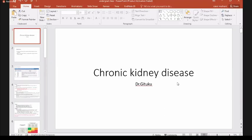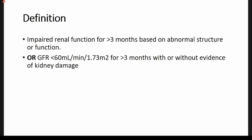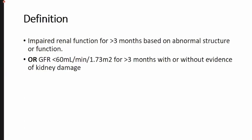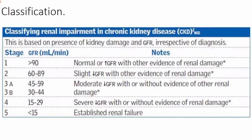I'll be taking you through chronic kidney disease. Chronic kidney disease is defined by impaired renal function for more than three months, based either on an abnormal structure or abnormal function. If a patient has an abnormal urinalysis persistently for three months, or an abnormal renal ultrasound persistently for three months, that qualifies them to have chronic kidney disease. You can also define it based on GFR — a patient with a GFR of less than 60 mls per minute for greater than three months, with or without evidence of kidney damage.